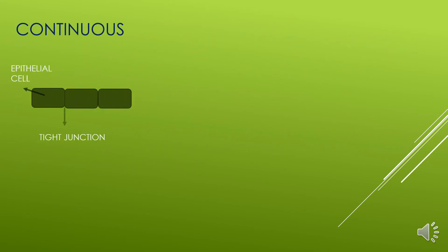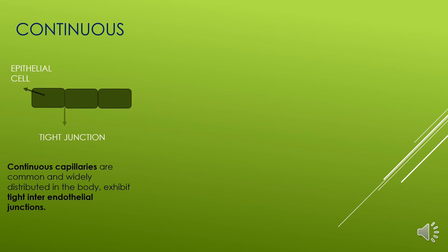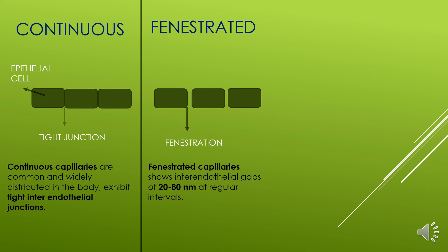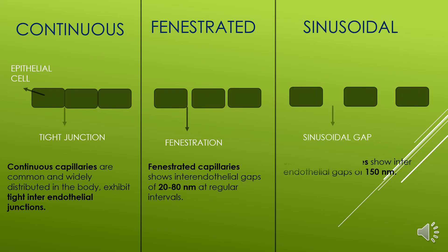Continuous capillaries have epithelial cells connected by tight junctions. They are common and widely distributed in the body and allow only small molecules to pass. Fenestrated capillaries have small pores that increase the flow of substances from capillaries to organs, showing inter-endothelial gaps of 20 to 80 nm at regular intervals. Sinusoidal capillaries have large open pores with inter-endothelial gaps of 150 nm.